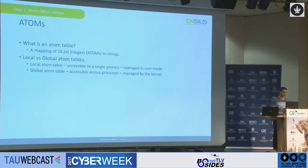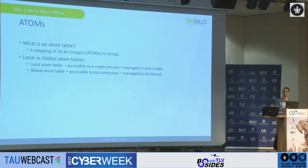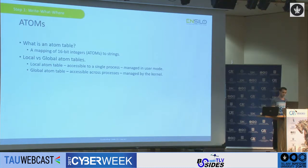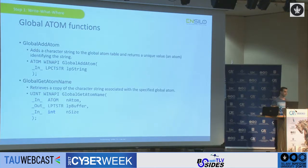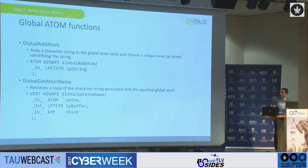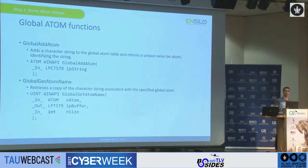There are two types of atom tables: local atom tables and global atom tables. The local atom tables are not very interesting to us because they're accessible to a single process and are entirely managed in user mode. However, the global atom table is accessible across processes, which makes it very interesting to us, and it's also managed by the kernel. The two functions we're going to use to manipulate the global atom table are GlobalAddAtom and GlobalGetAtomName. GlobalAddAtom is a simple function that gets a string as a parameter and returns an atom — the 16-bit integer used to represent the string in the atom table, sort of like an index.